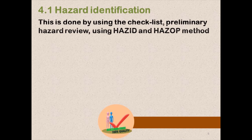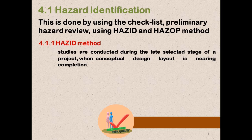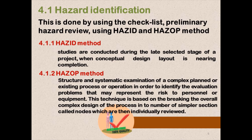Let's see the first step: hazard identification. This is done by using a checklist, preliminary hazard review using HSECP, and the HSECP method. The HSECP method involves studies conducted during the late selected stage of a project when the conceptual design layout is nearing completion. It is a structured and systematic examination of a complex plan or existing process to identify evaluation problems that may represent risk to personnel or equipment. The technique breaks the overall complex design into sections called nodes, which are then individually reviewed.